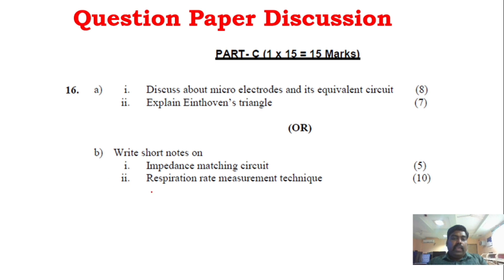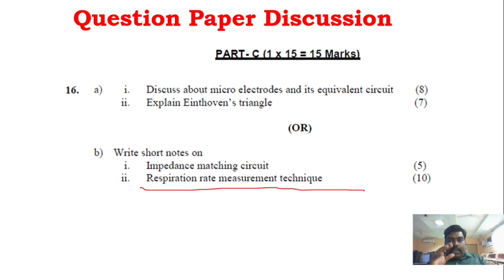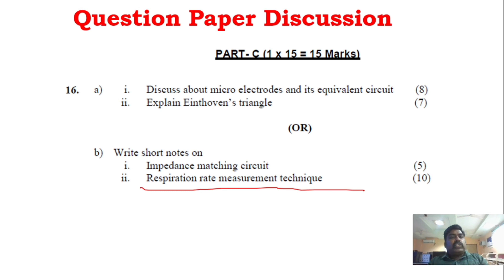Option B includes impedance matching circuit as well as respiration rate measurement technique from Unit 2. There are 4-4 questions per unit, and definitely one question from each will be easy enough to answer — such as analyzer-related questions.